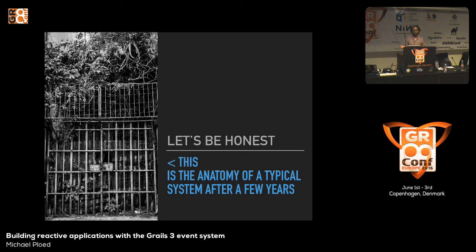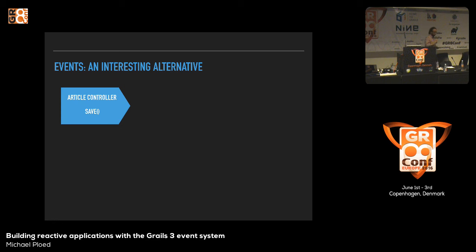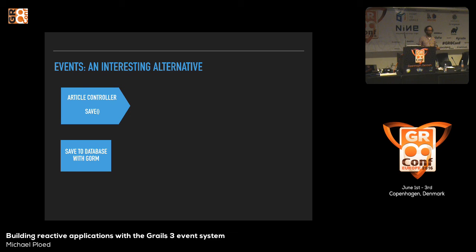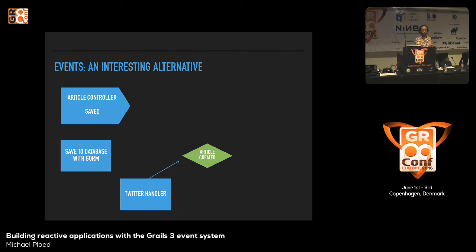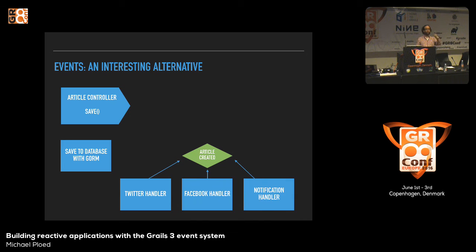We could refactor the code so that in the article controller, we only save the article to the database with GORM — that is the core business of the article controller. After that, the article controller publishes an event: 'article created' or 'article published.' We have handlers, listeners, or consumers that listen on the event and then post the article on Twitter, on Facebook, and notify the boss via mail. The nice thing here is we do not directly couple the article controller to the Twitter, Facebook, and email services anymore. They are loosely coupled.